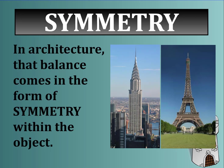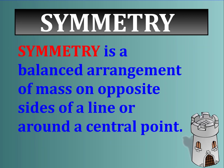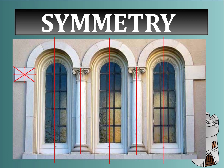In architecture, balance comes in the form of symmetry within the object. You can see in the picture of the Empire State Building there's clear symmetry straight down the middle, from the top of the spire all the way down. Same with the Eiffel Tower - straight down the middle, same on both sides. Symmetry is a balanced arrangement of mass on opposite sides of a line around a central point. This Bay of Windows shows several points of symmetry - each window, each column, and even the stonework are all symmetrical.